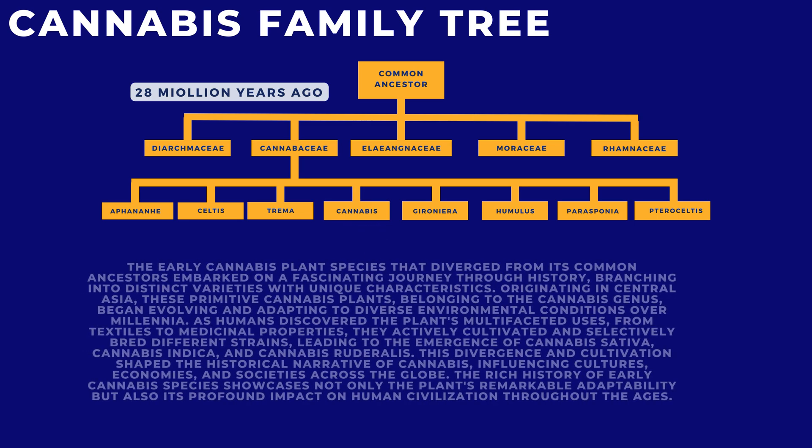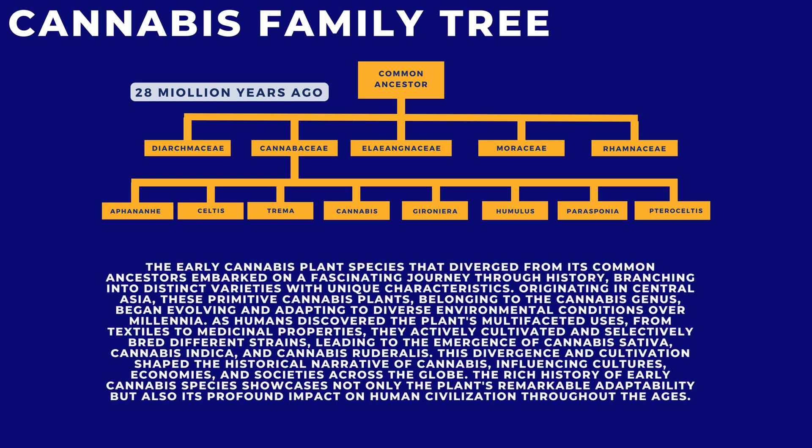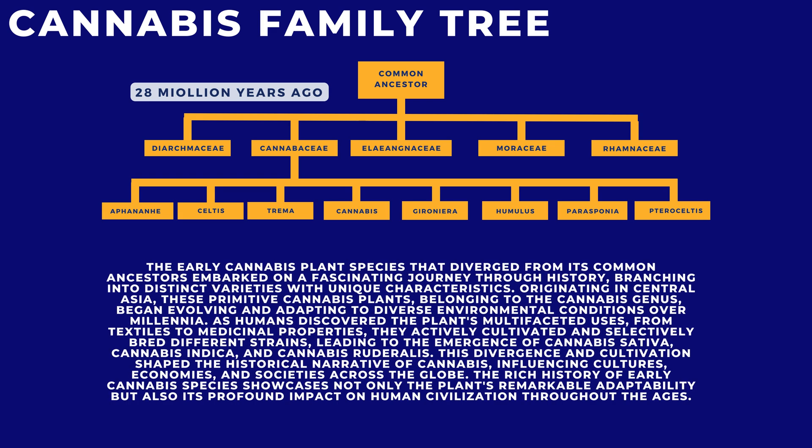The early cannabis plant species that diverged from its common ancestors embarked on a fascinating journey through history, branching into distinct varieties with unique characteristics. Originating in Central Asia, these primitive cannabis plants began evolving and adapting to diverse environmental conditions over millennia. As humans discovered the plant's multifaceted uses, from textiles to medicinal properties, they actively cultivated and selectively bred different strains, leading to the emergence of Cannabis sativa, Cannabis indica, and Cannabis ruderalis.